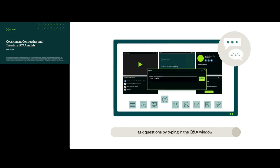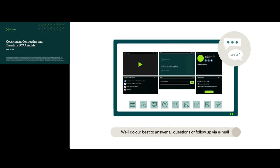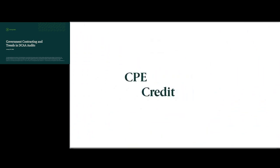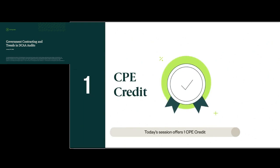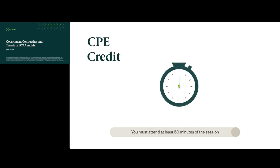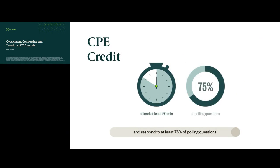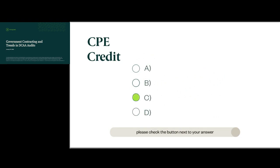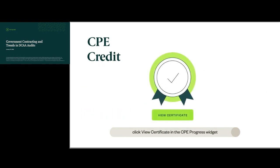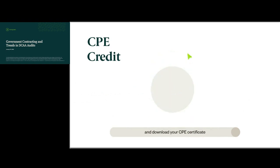You can ask questions by typing in the Q&A window and clicking submit. We'll do our best to answer all questions or follow up via email. If you experience technical difficulty, refresh your browser by hitting the F5 key. Today's session offers one CPE credit. To receive credit, you must meet the NASBA requirements — attend at least 50 minutes and respond to at least 75% of polling questions. We'll track your progress and alert you when you've earned CPE credit; you can then download your CPE certificate.